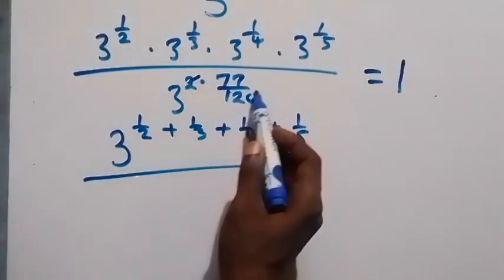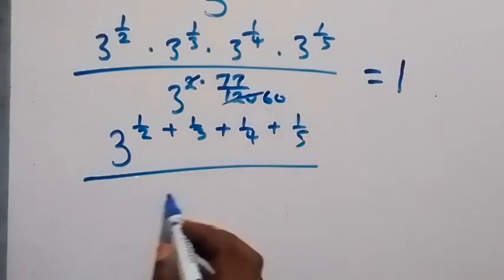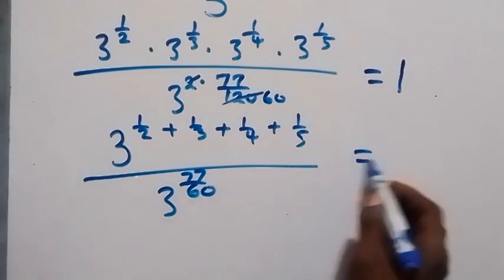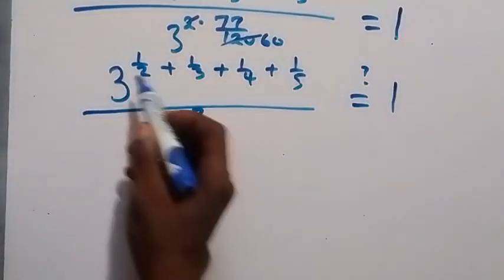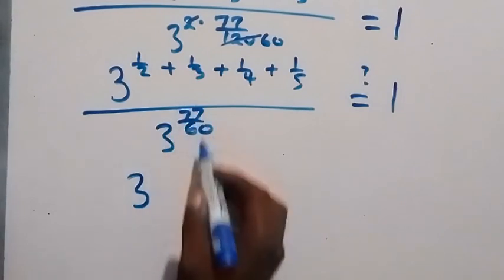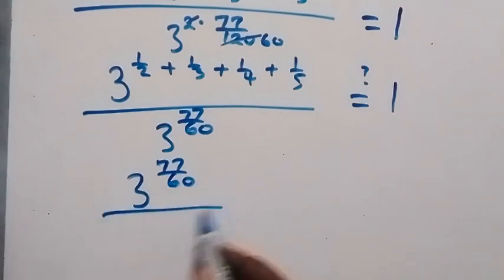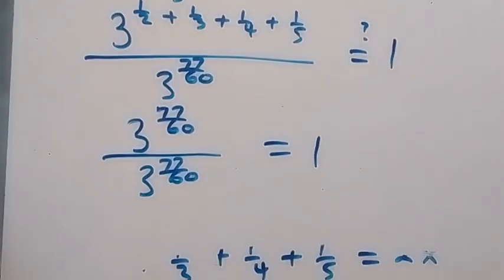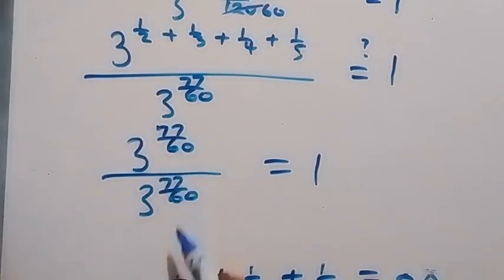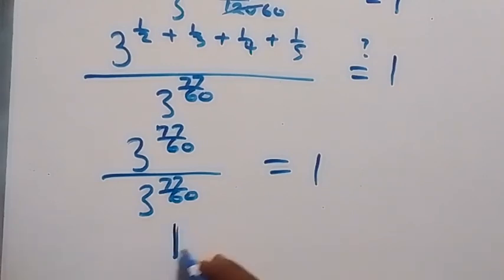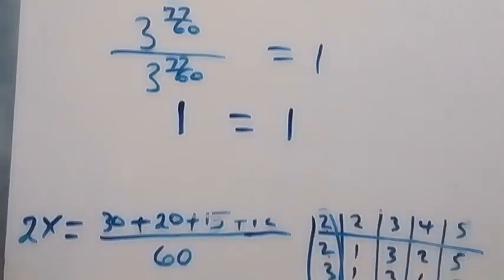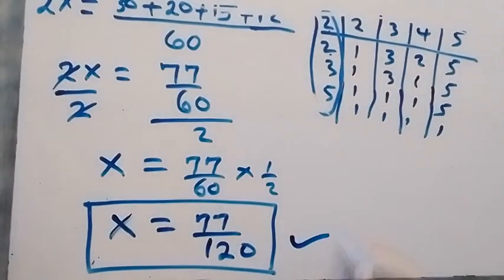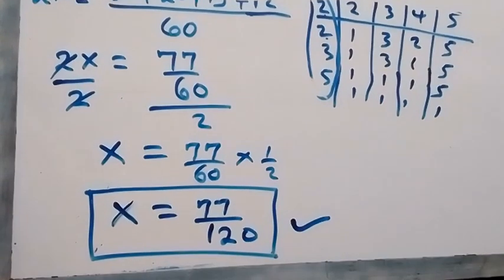Since 2 goes into 120 sixty times, the denominator becomes 3 raised to power 77/60. The numerator — with LCM 60 — also simplifies to 3 raised to power 77/60. So we have 3 to the power 77/60 divided by 3 to the power 77/60, which equals 1. The left-hand side equals the right-hand side, confirming x = 77/120 satisfies the problem. Thank you for watching — don't forget to subscribe for more exciting videos!